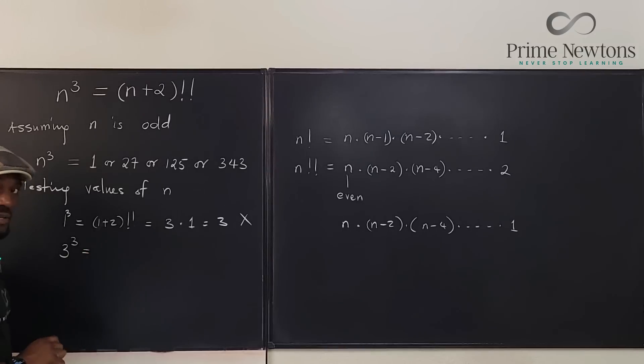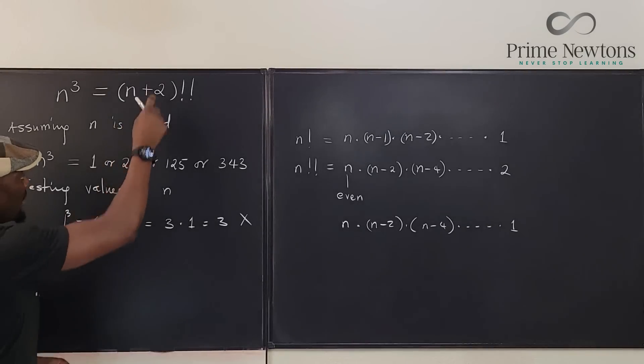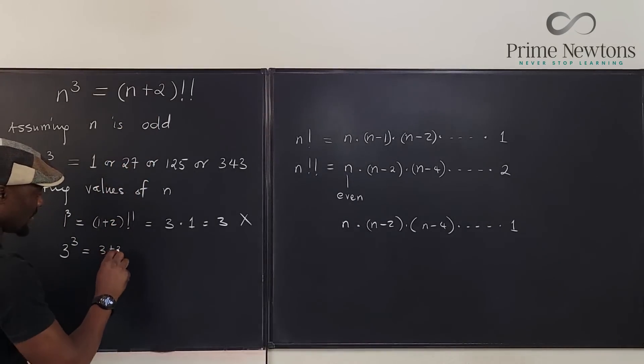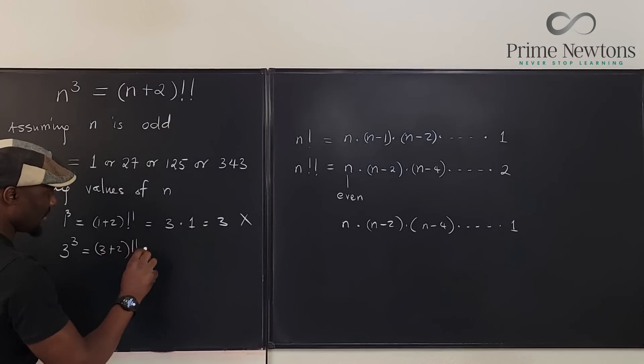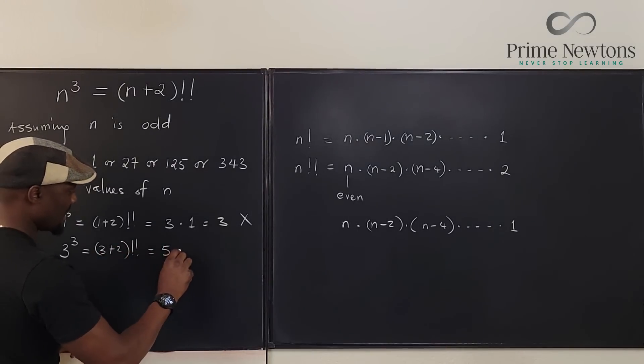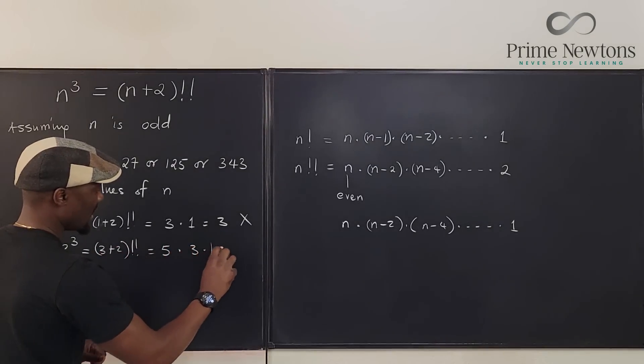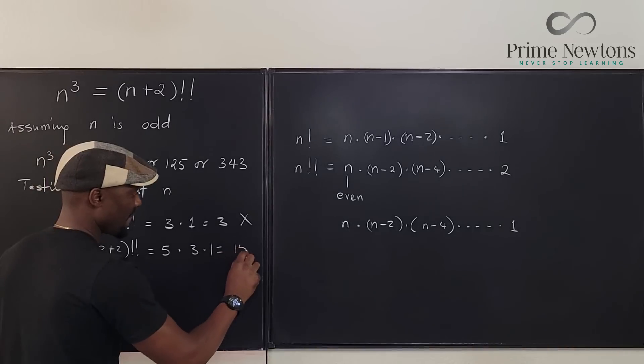3 cubed is 27. It's supposed to be, this is now going to be 3 plus 2 double factorial, which is going to be 5 times 3 times 1. And what's that? 15. Nope.